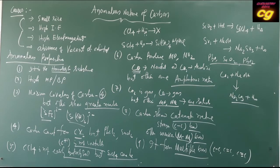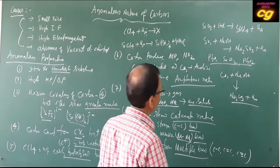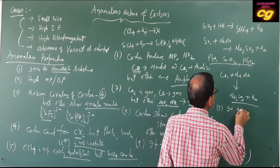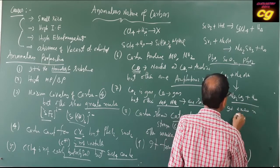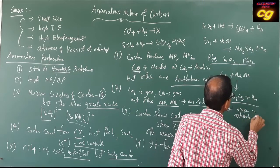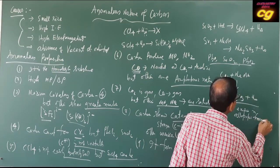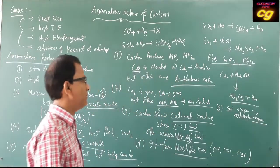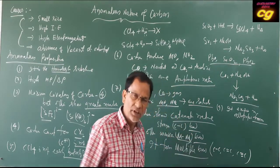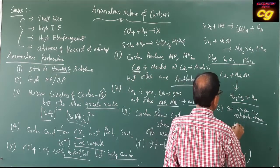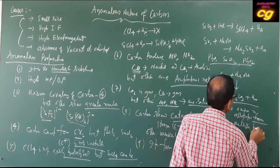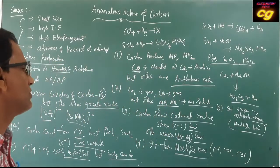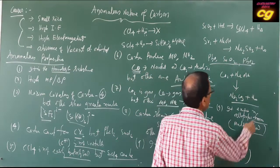These are the anomalous properties of carbon, which show different behaviour compared to other elements. Carbon also exists in allotropic forms. The allotropic modification is possible in case of carbon because it forms multiple bonds, giving rise to different structures. Other elements generally do not show allotropic forms.